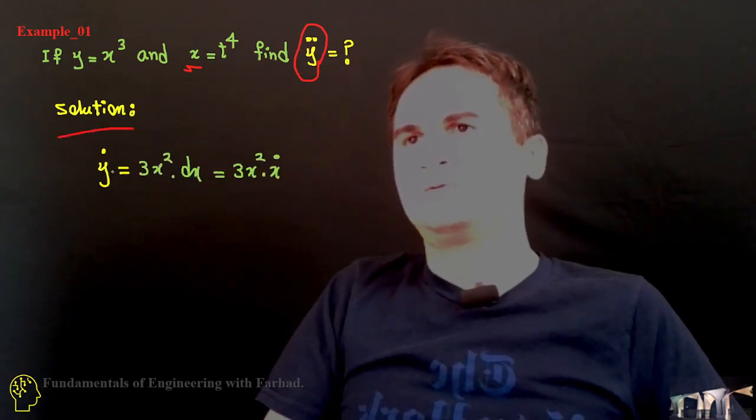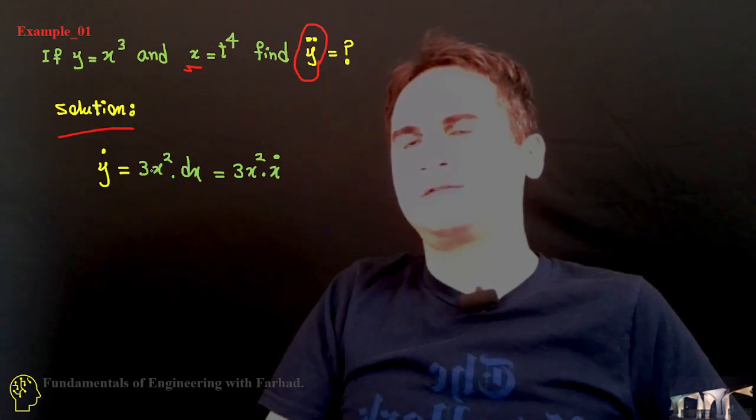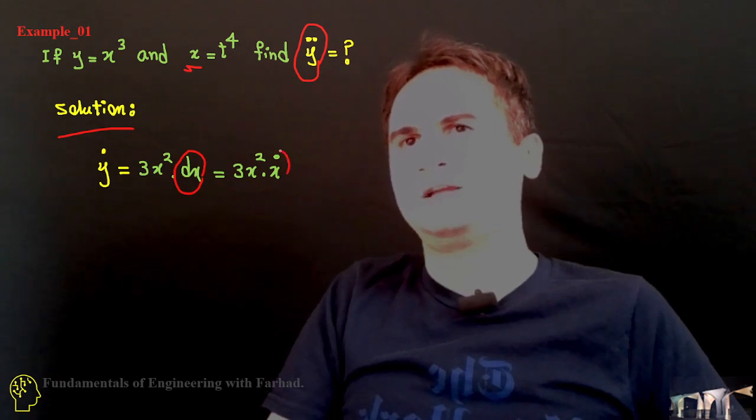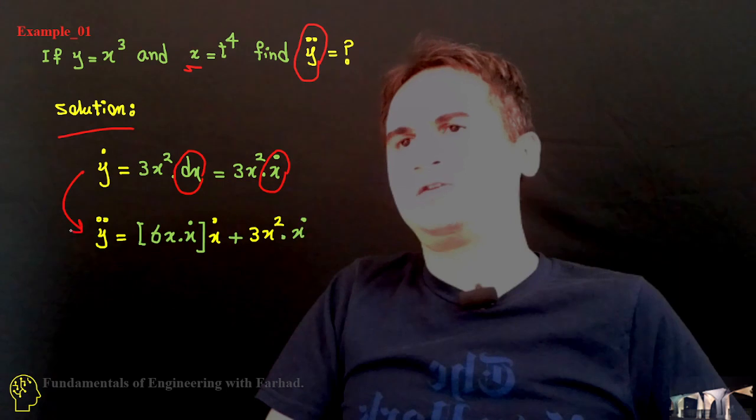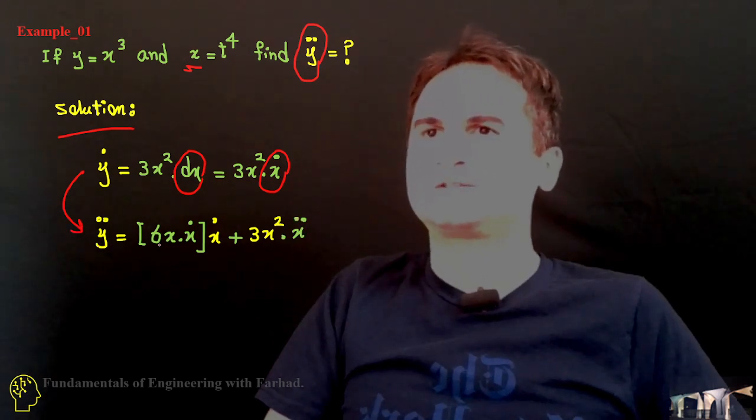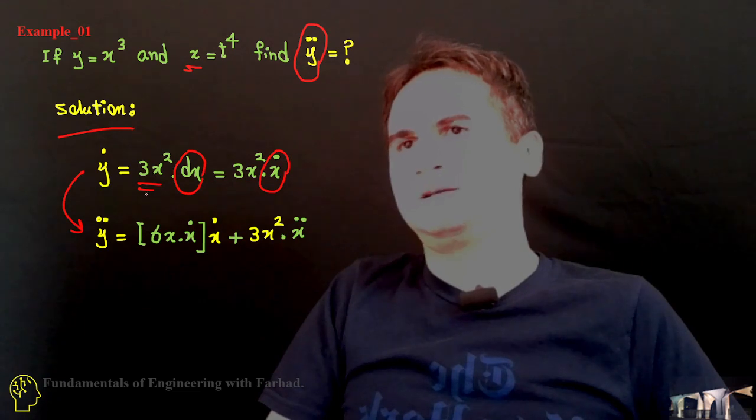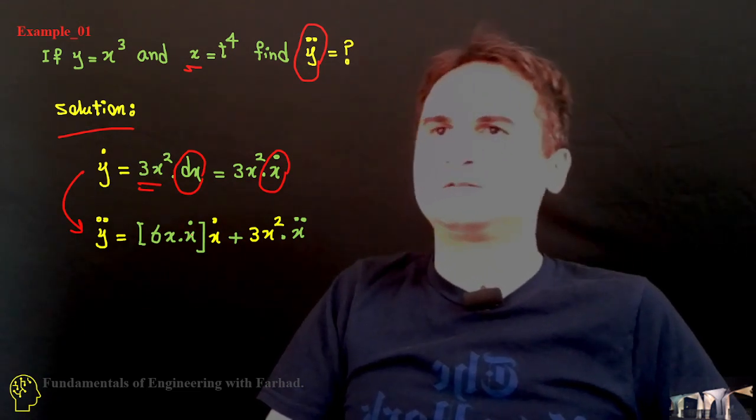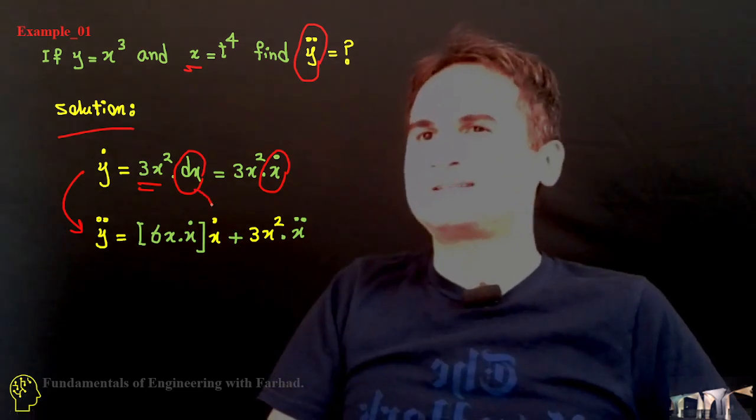So, y dot is 3x squared dx and we can show dx like x dot. If we derivate it once more, we just derivate the first part. That's 6x times x dot times dx itself.